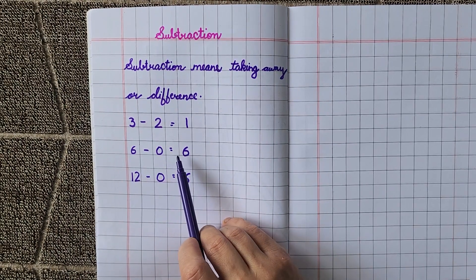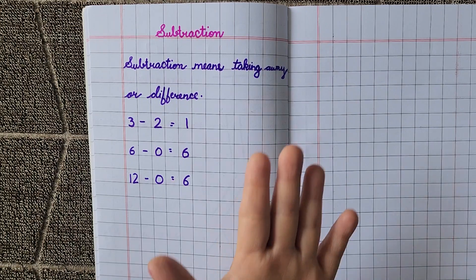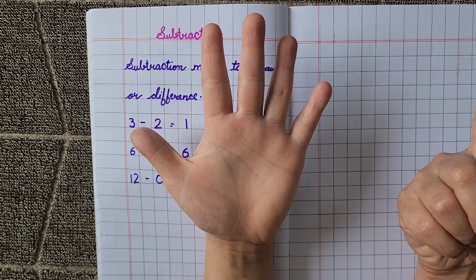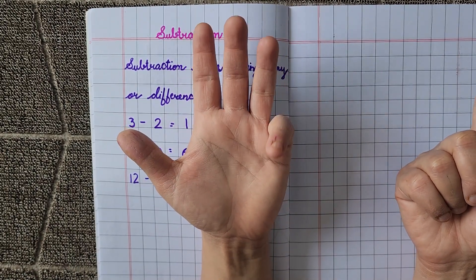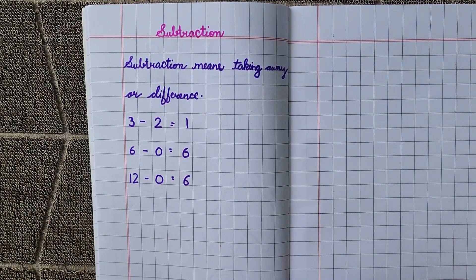Again, 6 minus 0. 0 means nothing. Agar humare paas 6 fingers hain, is mein se hum ne kuch bhi minus nahi kiya, तो humare paas kitni fingers hui? 6. 1, 2, 3, 4, 5, 6. So 6 minus 0 is equal to 6.